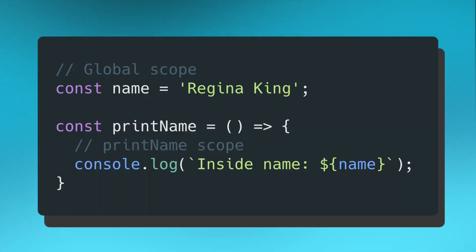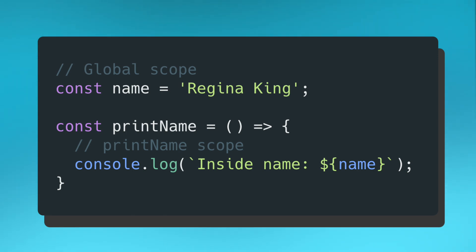If we want to look at a code block, we can look at this example. Here we have our name constant, which is set to Regina King, and it's in our global scope, meaning it's defined at the very top level of our file. The function right beneath it called print name uses that name constant to print out the string Regina King. So far, not too complicated — variables and methods throughout our application have access to the global level of our code.